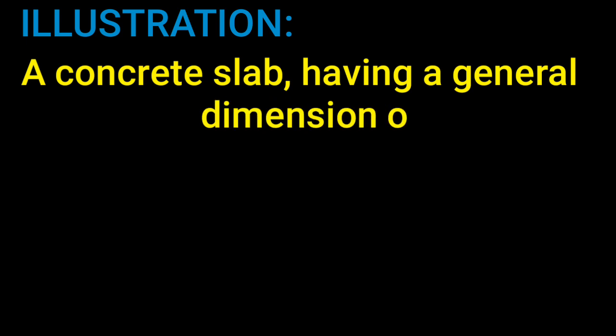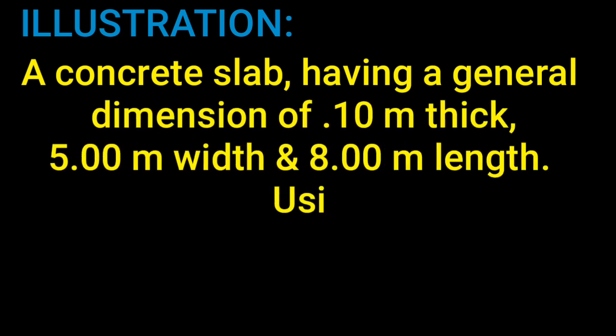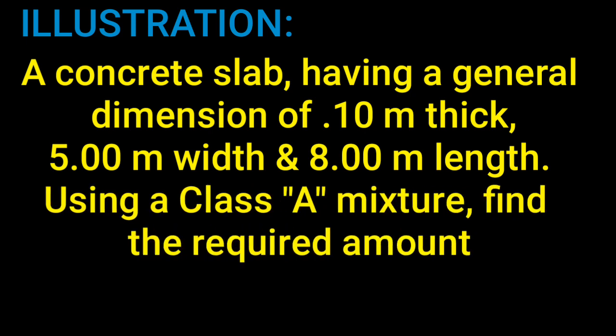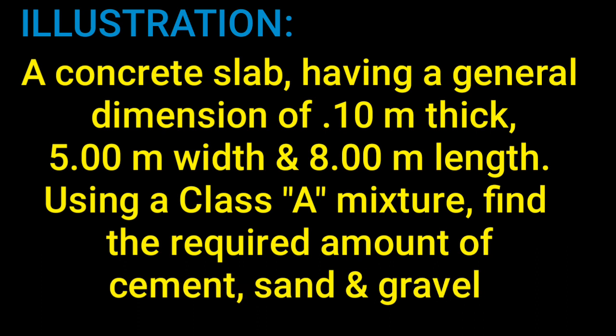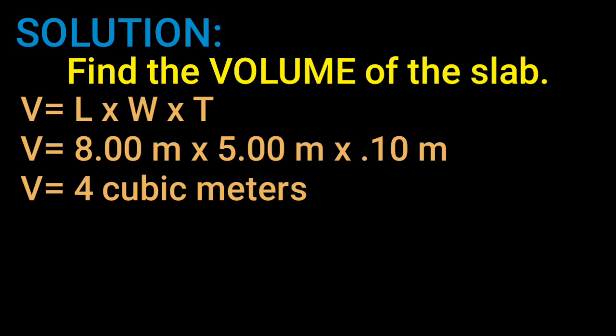Before going through this table of concrete proportion, let me first give this example: a concrete slab having a general dimension of 0.10 meters thick, 5 meters width, and 8 meters length, using a Class A mixture. Find the required amount of cement, sand, and gravel. To answer this, we first find the volume of the slab: Volume = Length × Width × Thickness = 8m × 5m × 0.10m = 4 cubic meters.